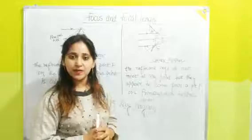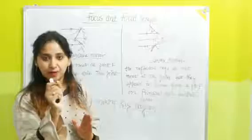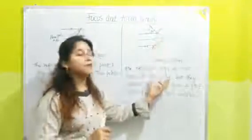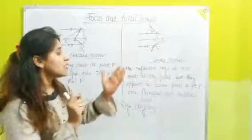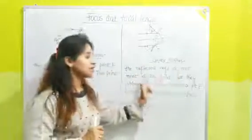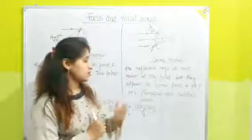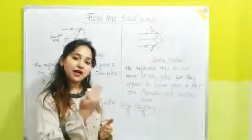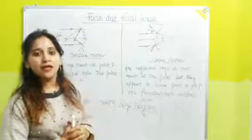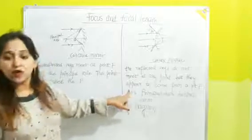Now let's talk about focus for a convex mirror. In a convex mirror, the reflected rays do not actually meet at any point. But they appear to come from the point F on the principal axis behind the mirror, and this point is known as the focus of a convex mirror. So this is the focus of a concave mirror and this is the focus of a convex mirror.